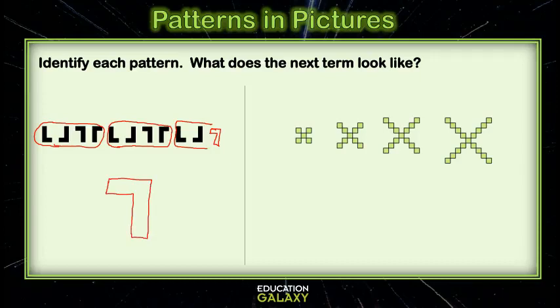The next one is a growing pattern. It's just growing and growing. So if we notice, the first term has the center square, and then it has one square on each of the corners. The second term has that center square, and then it has two squares on each of the corners.